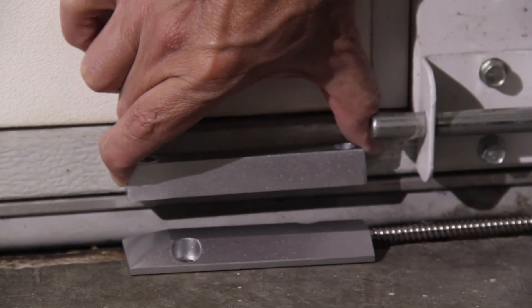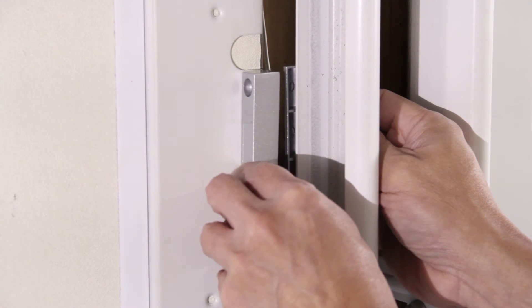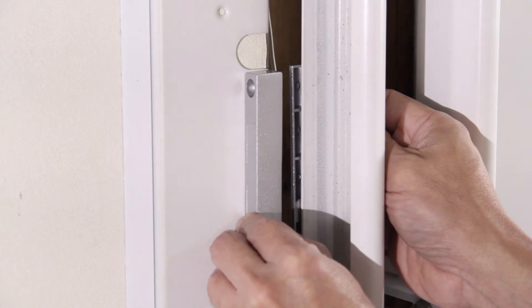You can put the switch anywhere, so long as the sensor is at a fixed location, and the magnet is on the moving garage door no more than 2 inches apart from each other.